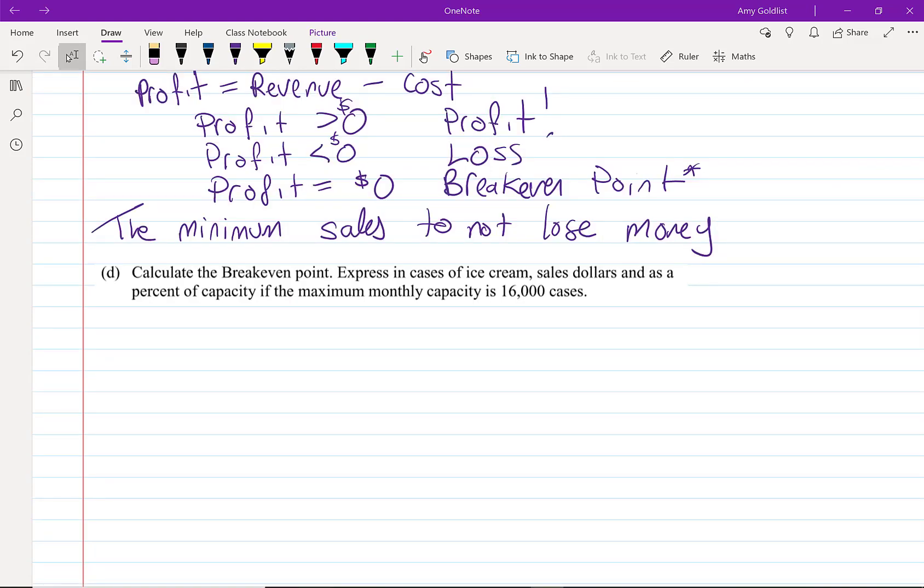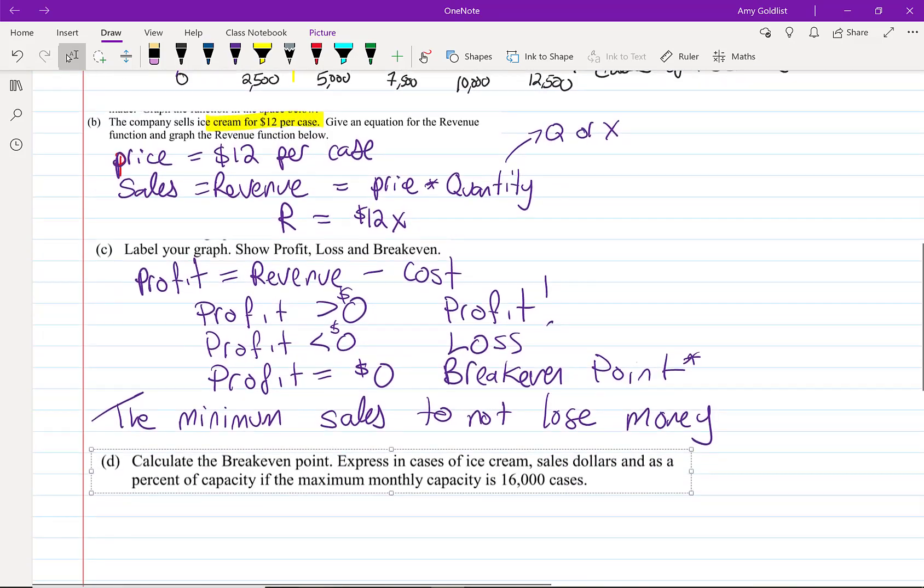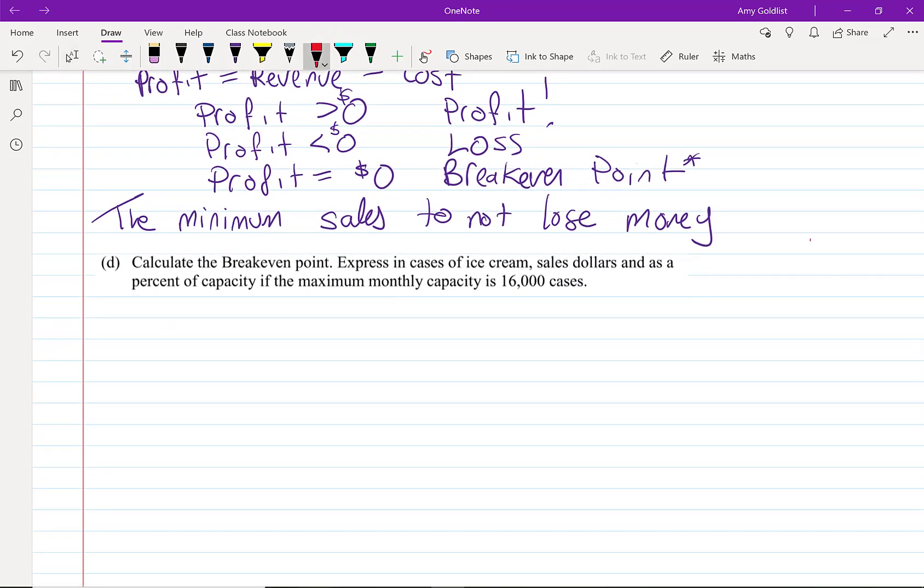Okay, part D. Let's calculate the breakeven point. We're gonna express it in multiple ways. So looking at our chart earlier, we think it's somewhere around 4,000, but now we're gonna look at that algebraically. So the breakeven point comes when profit equals zero.